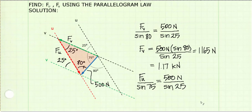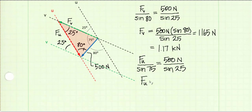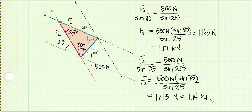I can solve for the magnitude of f sub u using the same method. The opposite angle for vector f sub u is the 75 degree angle, shown here. Solving for f sub u, I get 1.14 kilonewtons as the magnitude.